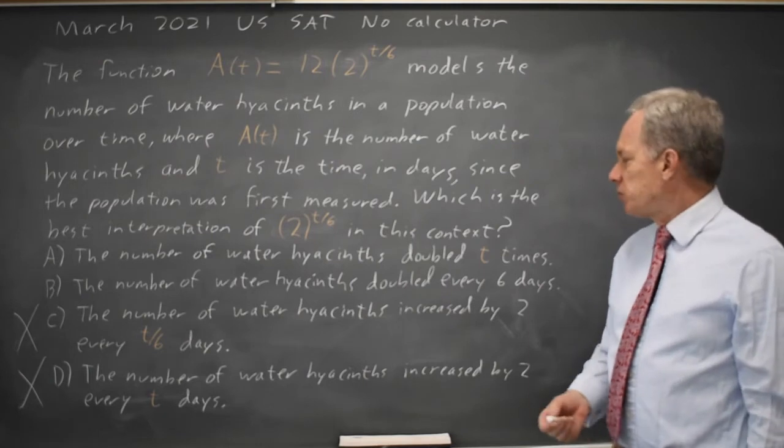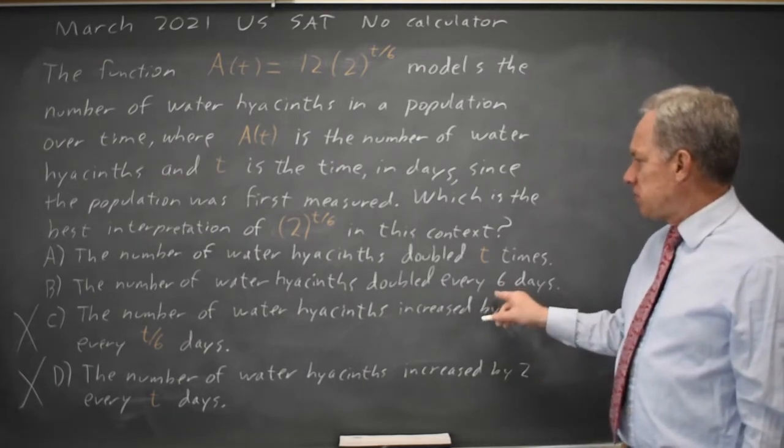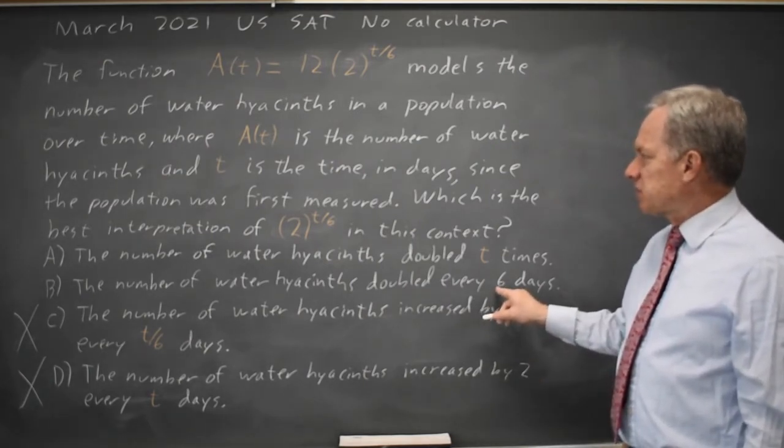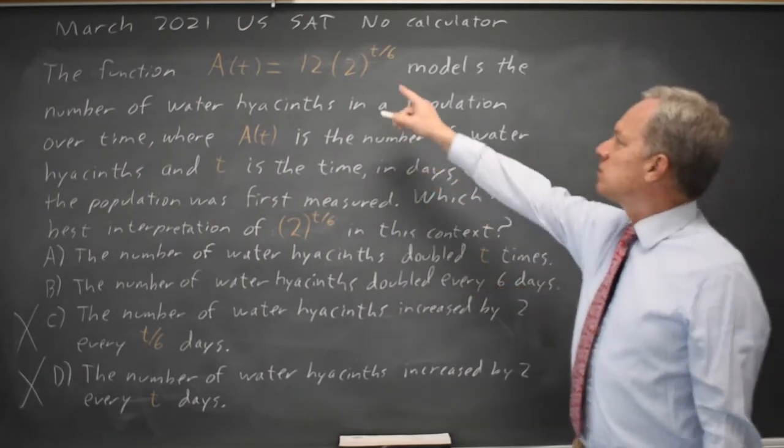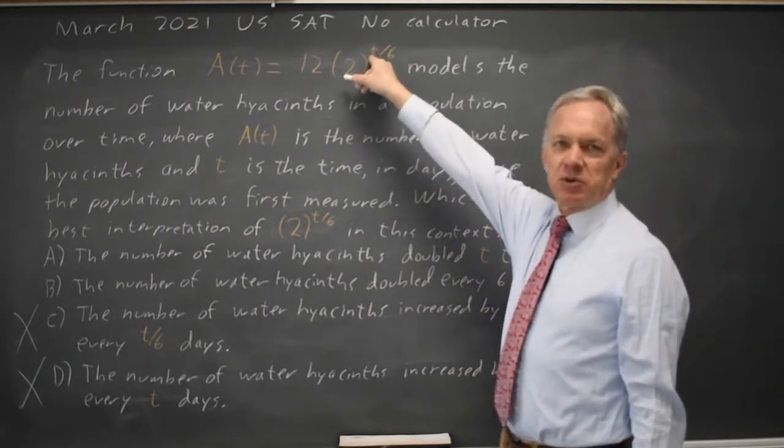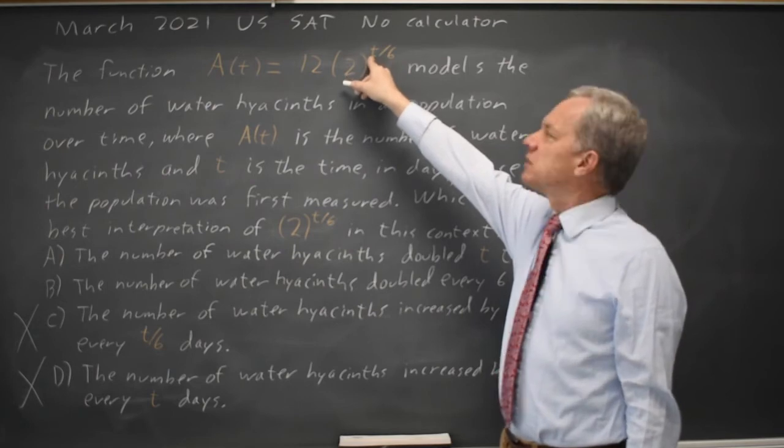Let's look what happens if we put the number of days equal to 6 where t is the time in days. So that would be 2 to the t over 6 where t is 6, which is 2 to the 6 over 6, which is 2 to the 1.